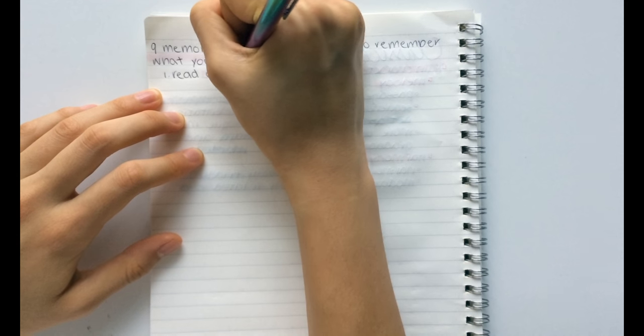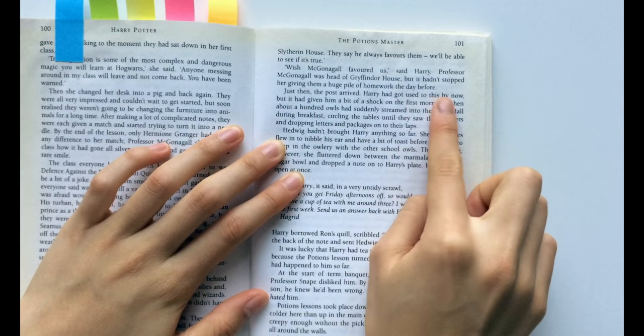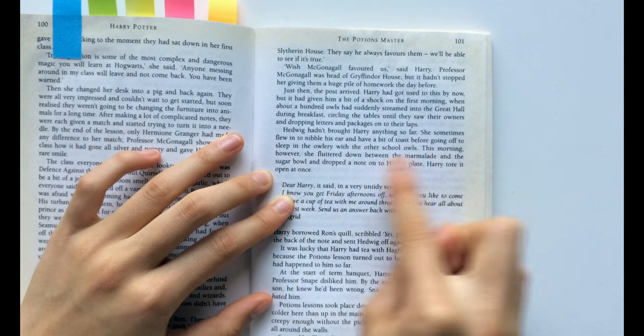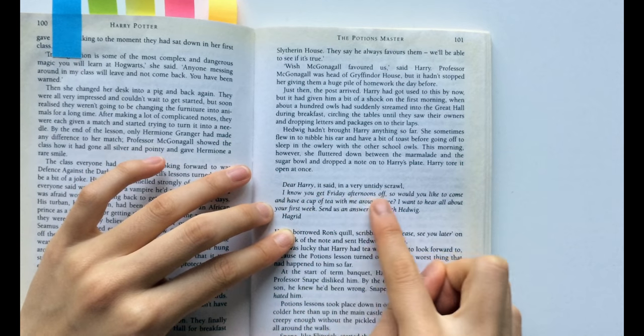The first hack is to read out loud. Reading out loud is scientifically proven to be a more effective way to remember compared to reading silently because you are both speaking and hearing the information.